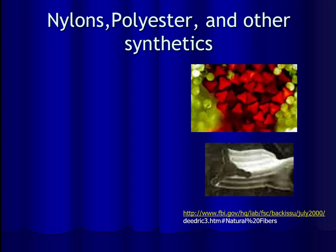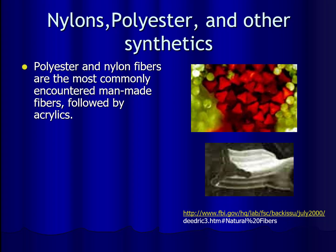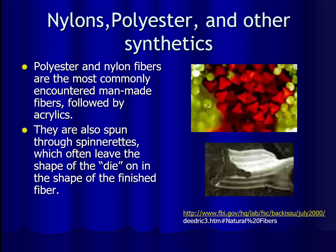Polyesters and nylons are the most commonly encountered man-made fibers, closely followed by acrylics. All of them are spun through spinnerets, which often leaves the shape of the spinneret die on the finished fiber. For example, some fibers are a tri-lobed or triangle shape, while others are round — those shapes are completely a function of the shape of the die that the liquid polymers were pushed through. It's kind of like a Play-Doh set where you squeeze the dough through different shapes.